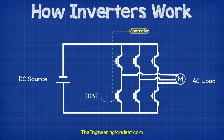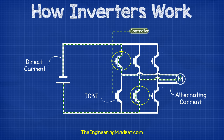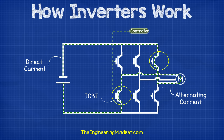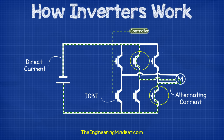Let's look at a three-phase example for a motor. This circuit has a DC source and an AC load, and to convert the direct current into alternating current, there are a series of IGBTs connected to a controller. The controller sends a signal to each IGBT telling it when to open and close, and these IGBTs are paired together. When the circuit is powered up, the controller switches pairs of IGBTs to allow current to pass through them for a set amount of time, so that the motor experiences an alternating current — in this case in three phases.